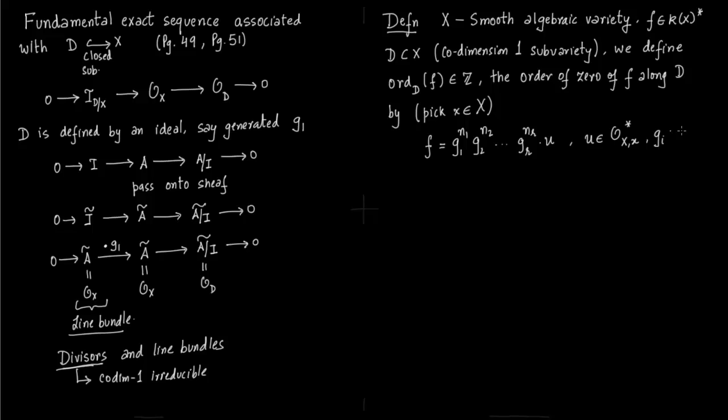Each of these g_i is irreducible and D is defined by g1. So the ideal of D is g1. g1 is the polynomial which defines it. g1 is irreducible, and so the order ord_D(f) is just n1, the exponent of g1.